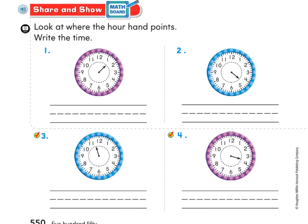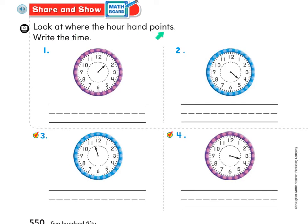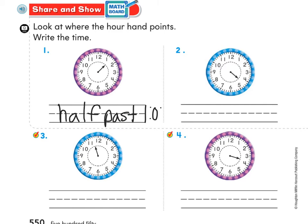Let's go down here. It says look at where the hour hand points and write the time. I'm telling you right now, they're all pointed between two numbers. On this clock, we see it's pointed between the one and the two. It started on the one and it's moving towards the larger number. If you get confused about which number to write, just think about how it used to be on the one and now it's half past the one. So for number one, you're going to write 'half past one o'clock.'